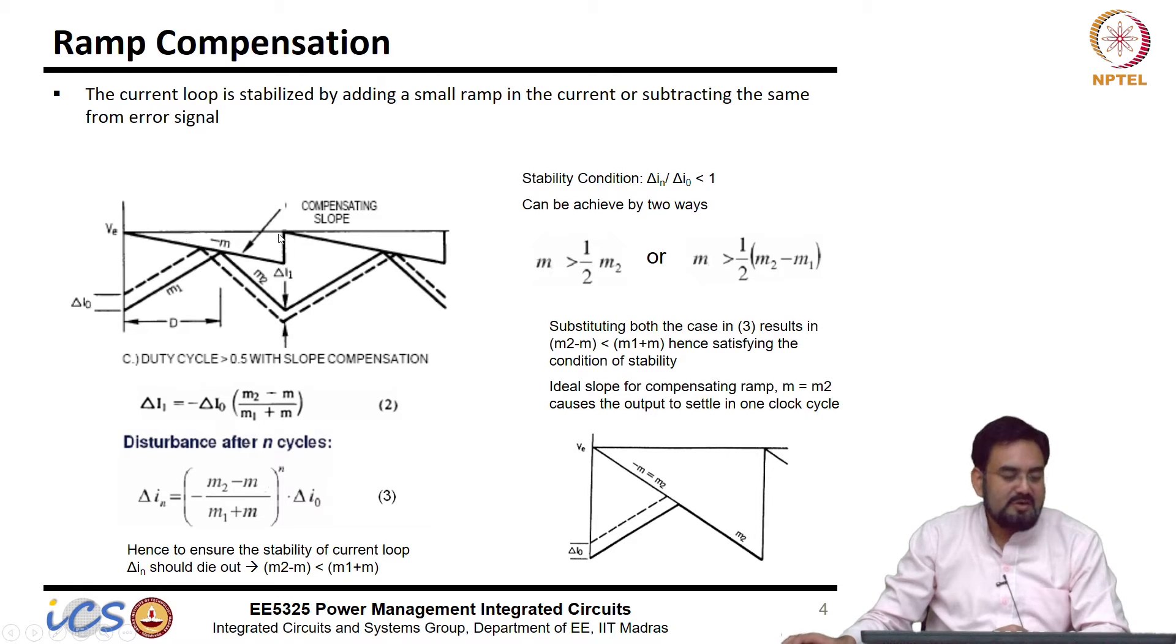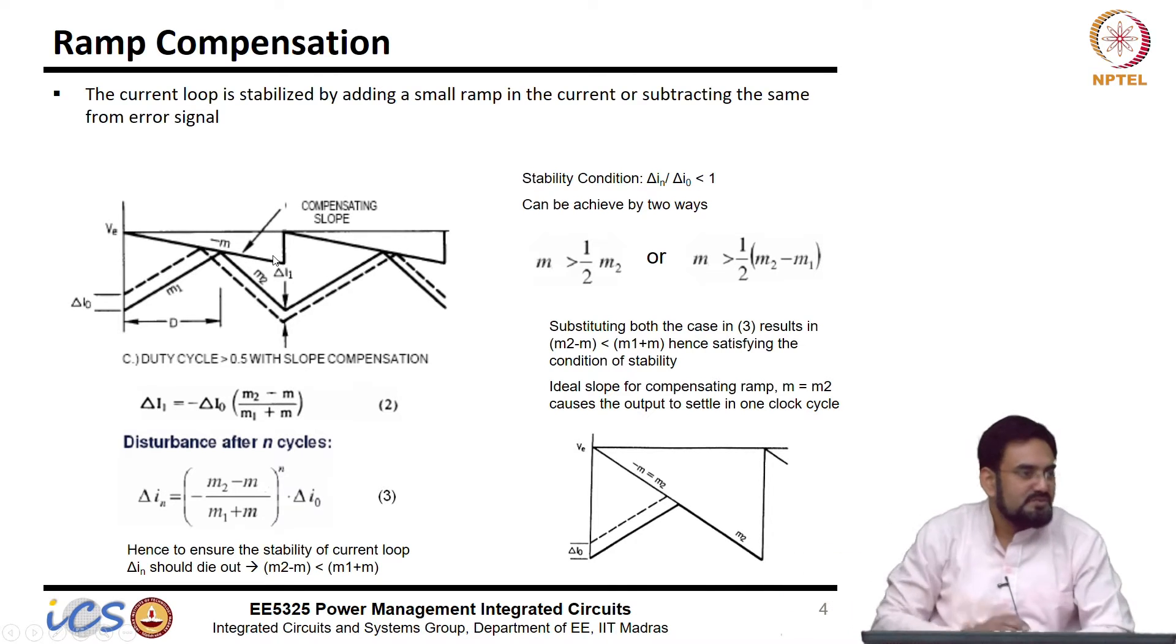So, it has one DC component which is coming from your error amplifier or your compensator and then on top of that you add this ramp. And this ramp is nothing but same as what you do in the voltage mode control.